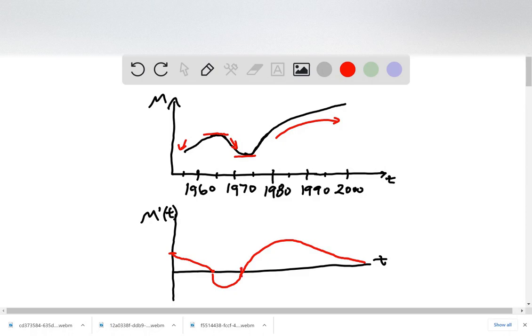This would be 1970 and 1960 would be over here. 1980 here, and so on. 1980 here, roughly.